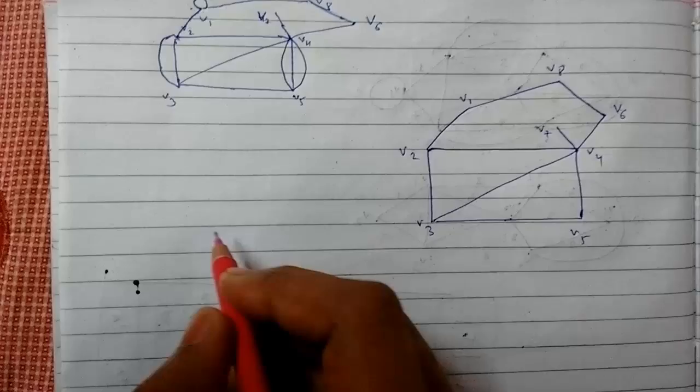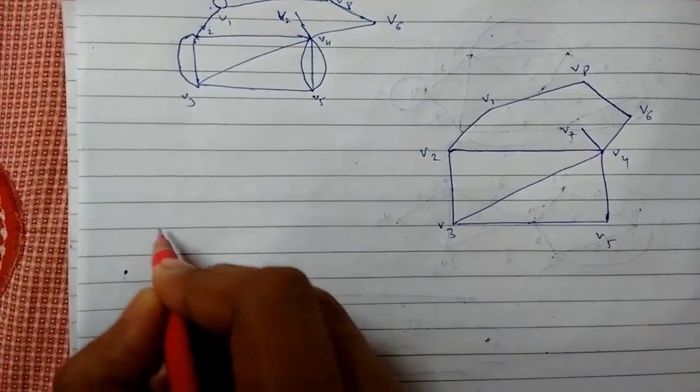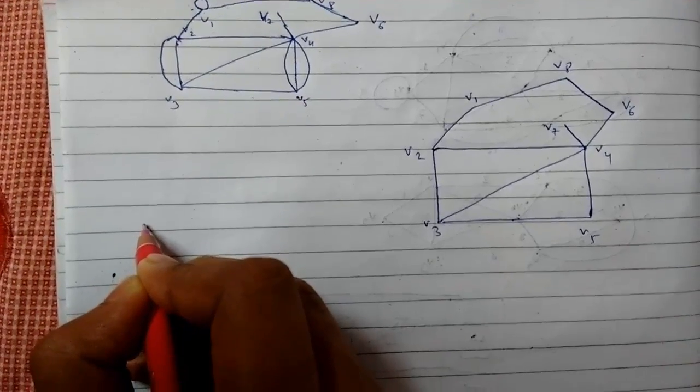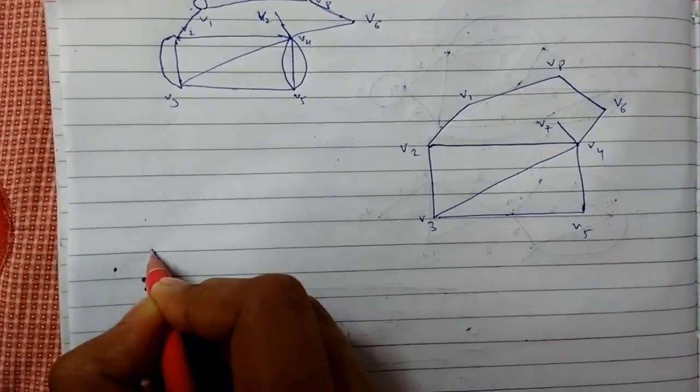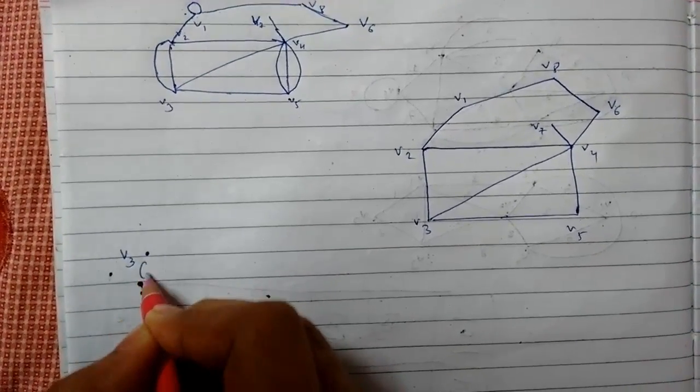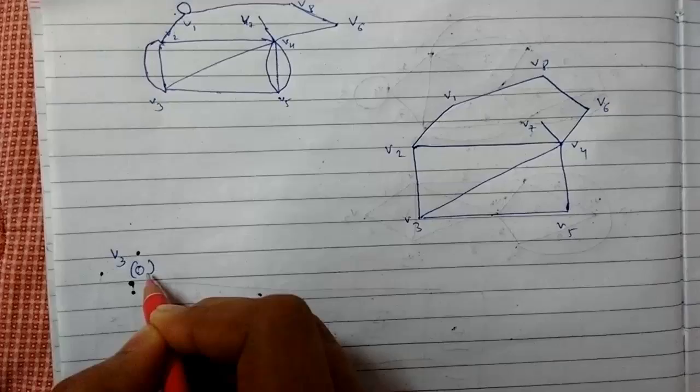We need to choose the vertex v3 and label it as 0. There are many steps - you need to write all the steps properly. So v3 I have chosen as the starting vertex and we label it as 0.